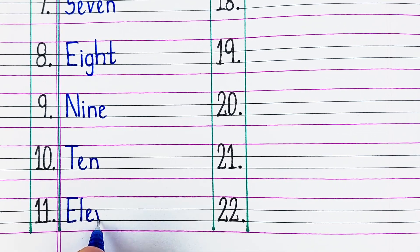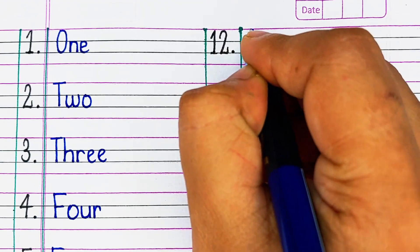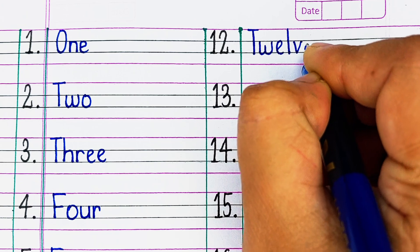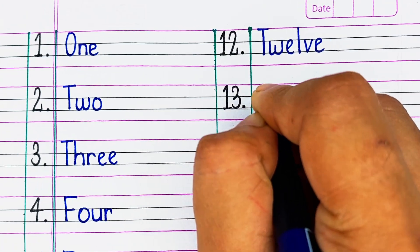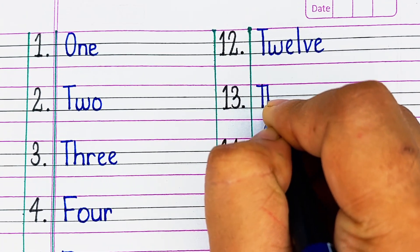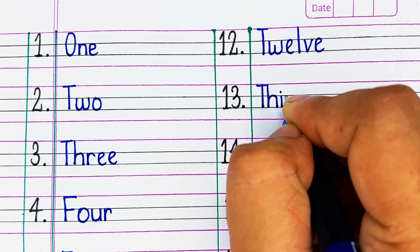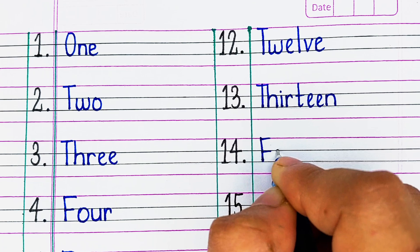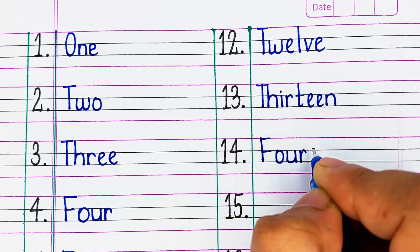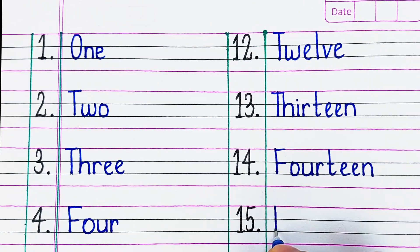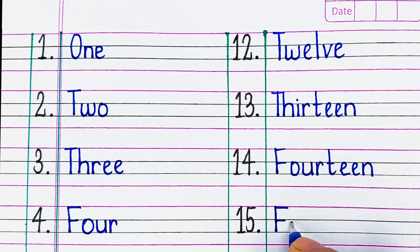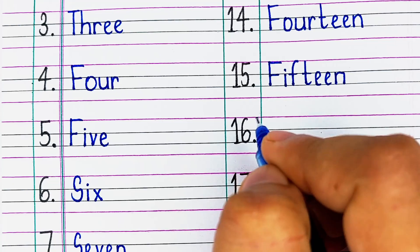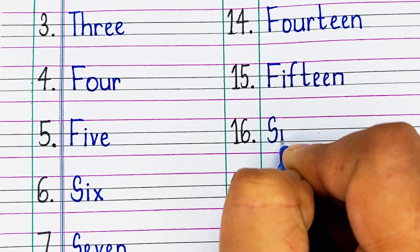Next, T-E-N, 10. Next is E-L-E-V-E-N, 11. Next, T-W-E-L-V-E, 12. Next, T-H-I-R-T-E-E-N, 13. F-O-U-R-T-E-E-N, 14.